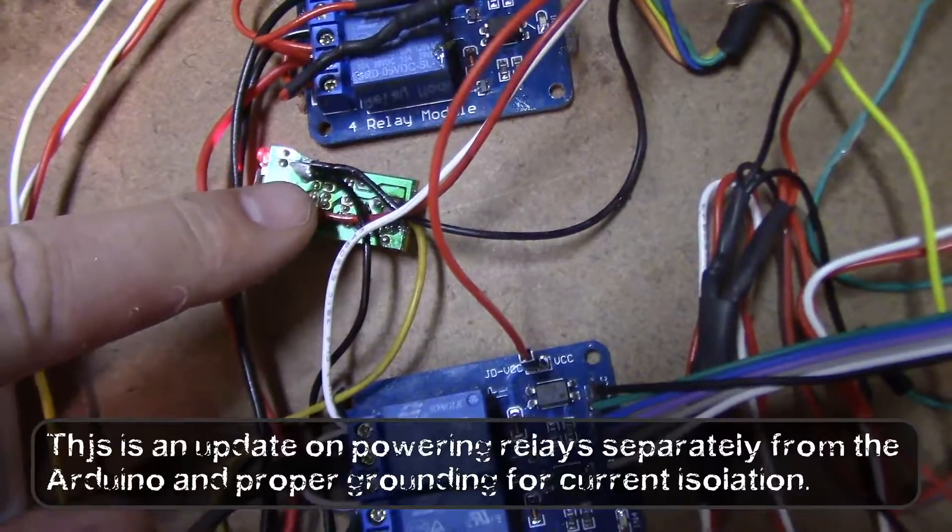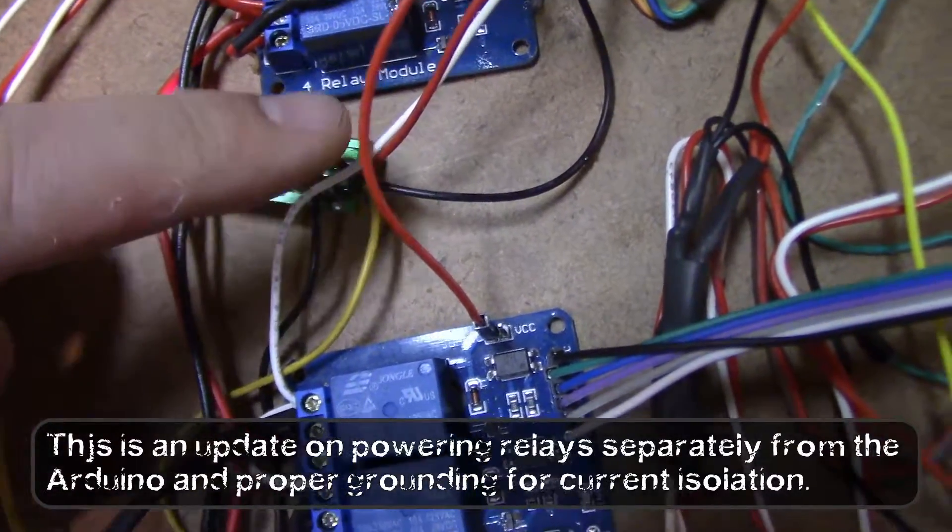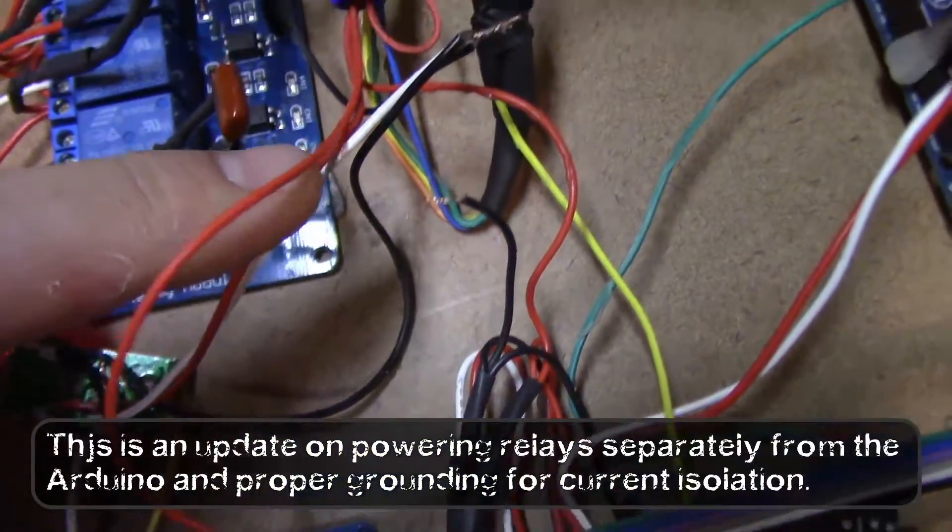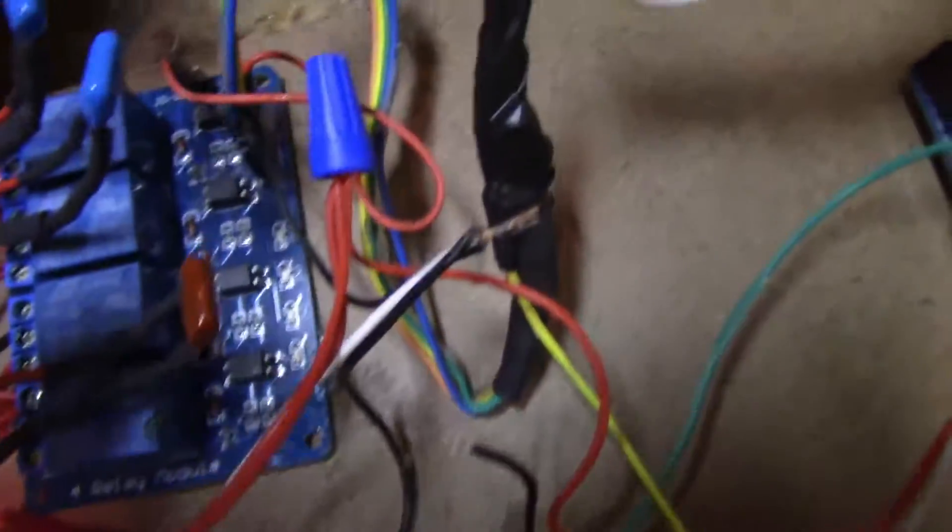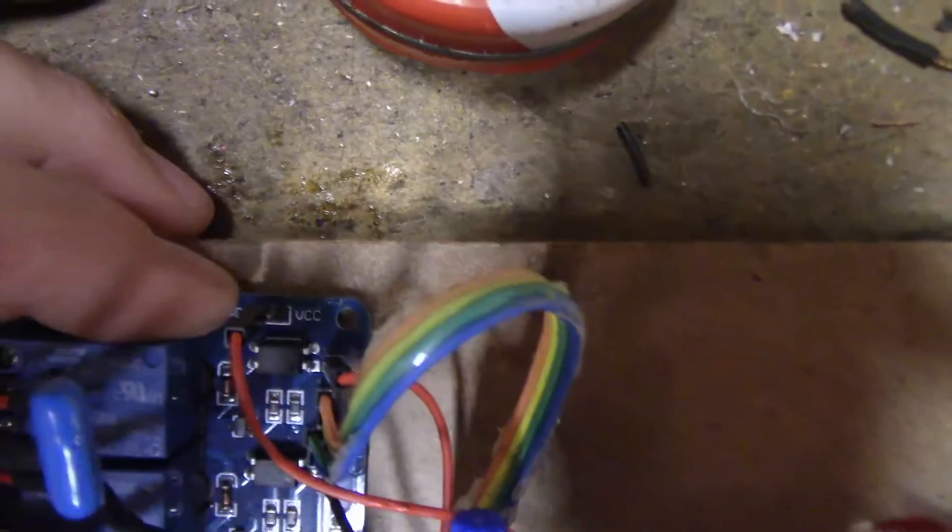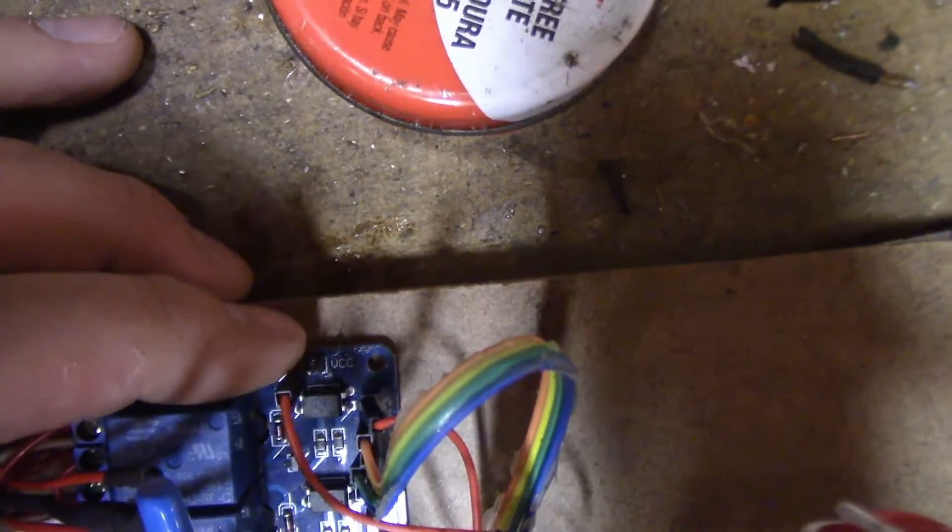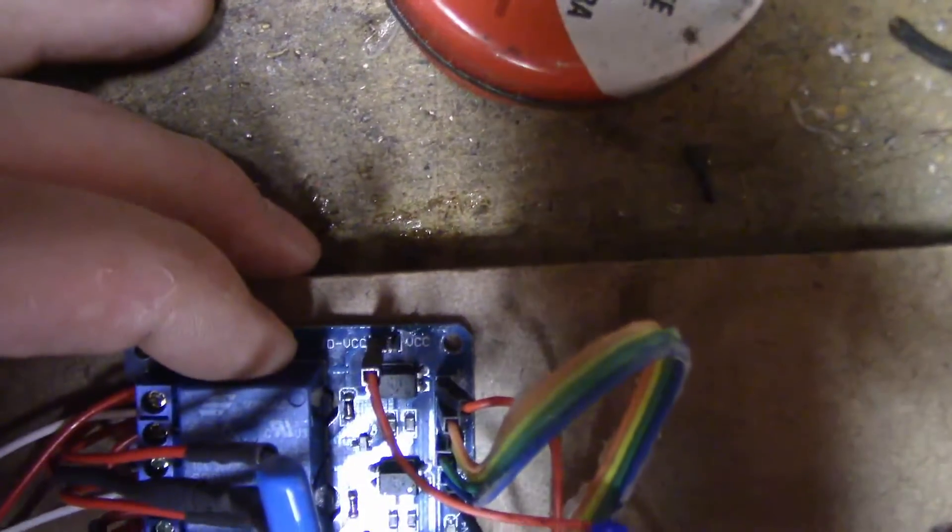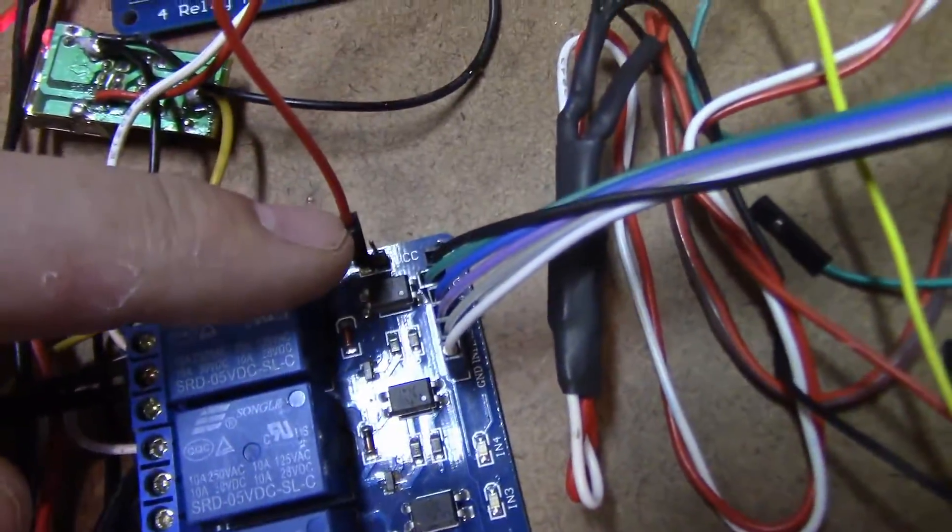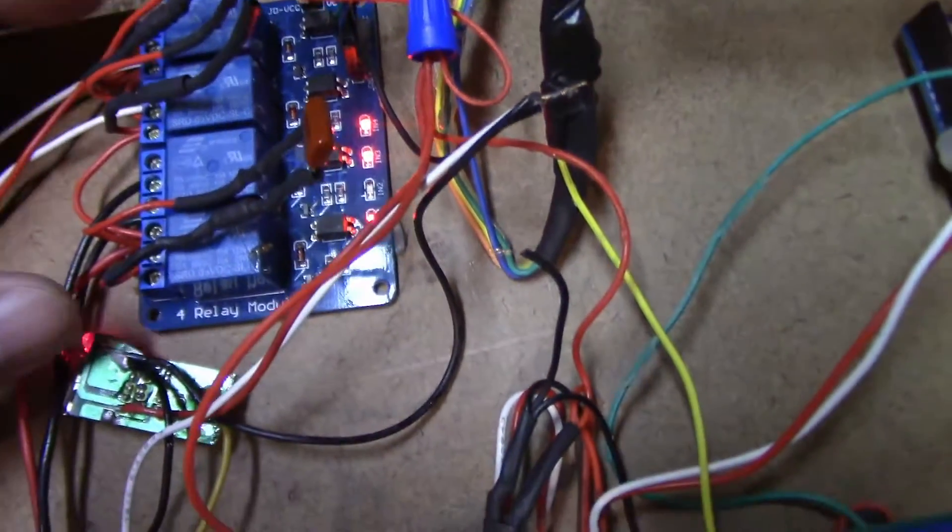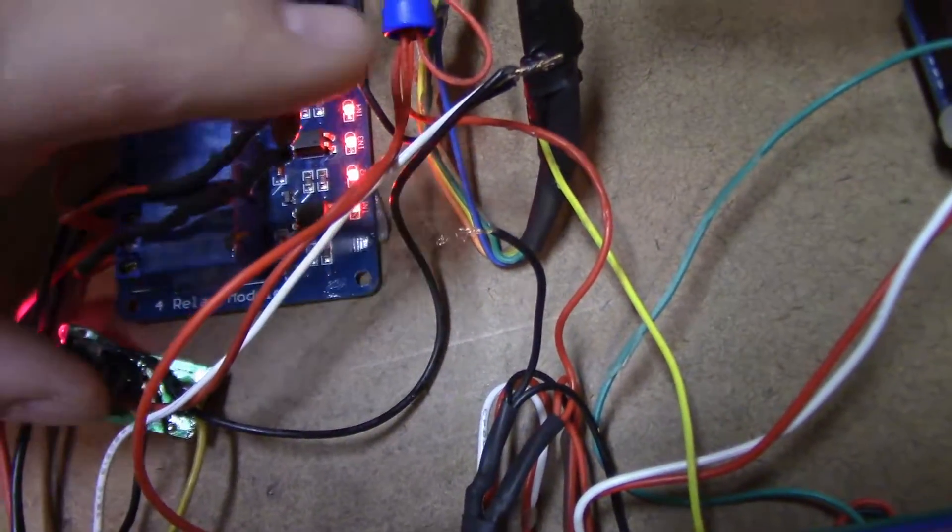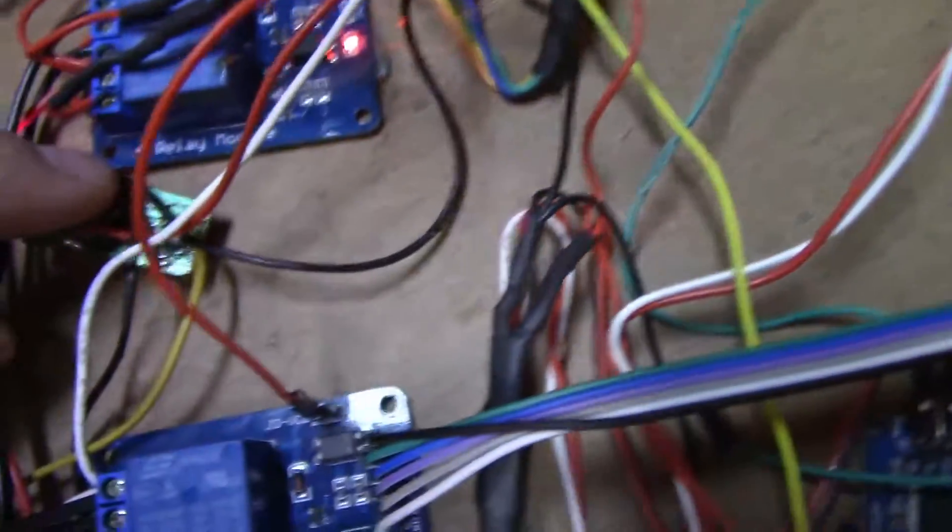Okay, right here is my 5 volt power supply. This is the positive coming off of it, getting tied together here, going to the JD-VCC pin connection and going the same thing on my second set of relays. You can hear the relay just fired, and the question was: do the grounds have to be connected from this to the Arduino?